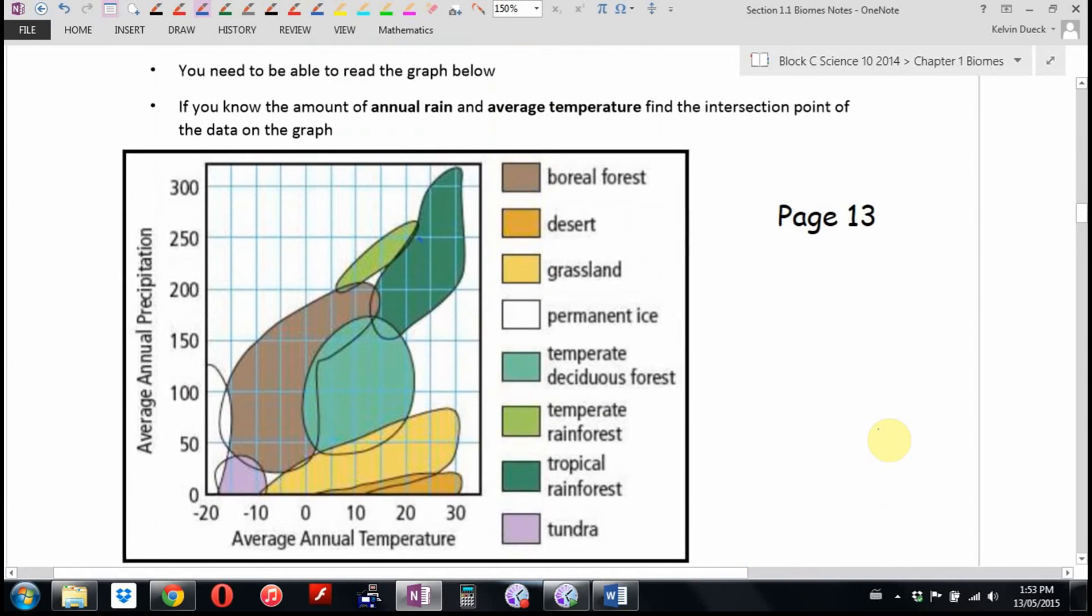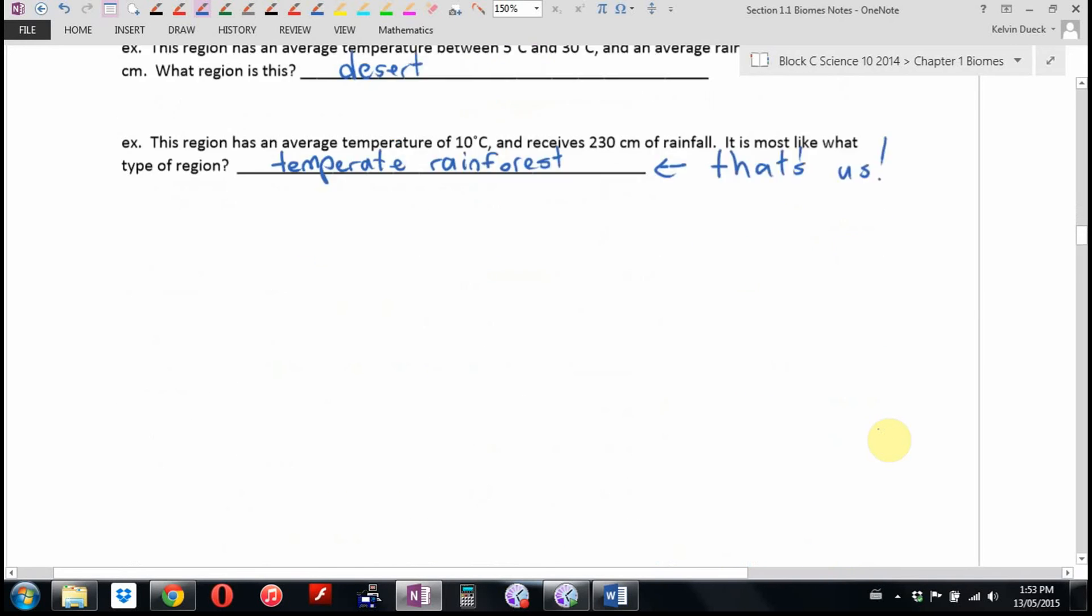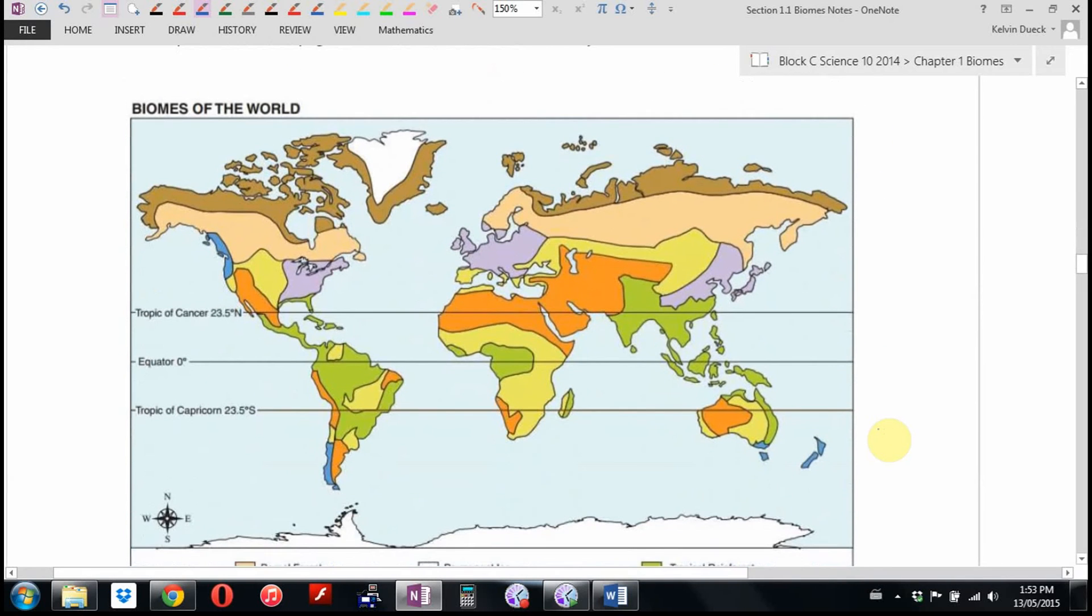So certainly I would have no problem on the test giving you a graph like this and saying, identify, if I tell you, Allison, temperature and precipitation, you should be able to narrow it down to which biome we're talking about. Turn in your textbook to page 10 to see a lovely color picture of this. These are the biomes of the world.